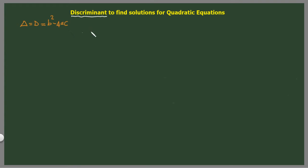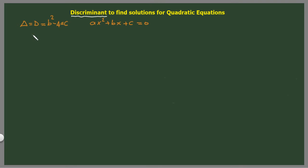If you look at the standard form of the quadratic equation, it is ax² + bx + c = 0. It means that you just have to replace a, b, and c into the formula to find the discriminant. And the good thing about the discriminant is that you can know from the very beginning if you have two solutions, one double solution, or no solution at all.